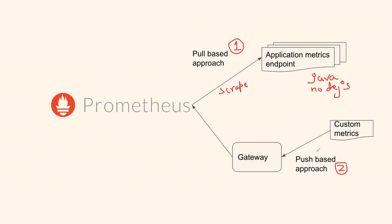In the push-based approach, your application will send the metrics via a gateway node and they will be stored in Prometheus. The arrow mark in the diagram clearly explains this. The use case for push-based approach is for applications that might not be running 24/7 — they come up and go away. In such cases, push-based will help.